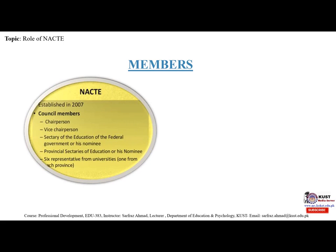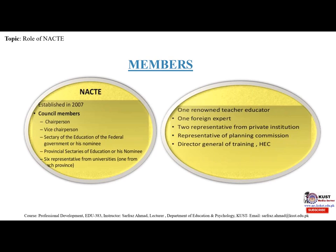NACTE was established in 2007. Its council members include: a chairperson and vice-chairperson; the Secretary of Education of the Federal Government or his nominee; provincial secretaries of education or their nominees; six representatives from universities, one from each province; one renowned teacher educator; one foreign expert; two representatives from private institutions; a representative of the Planning Commission; and the Director General of Training, HSE.